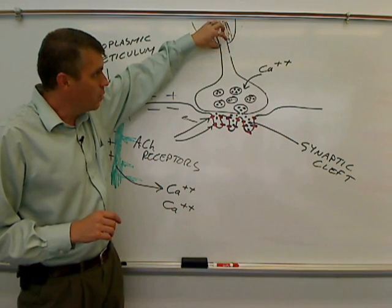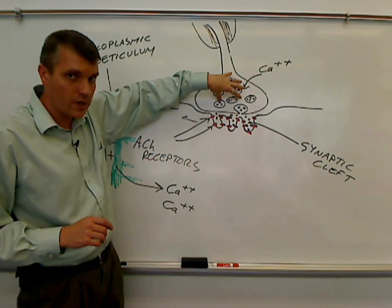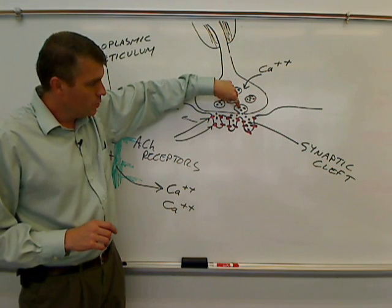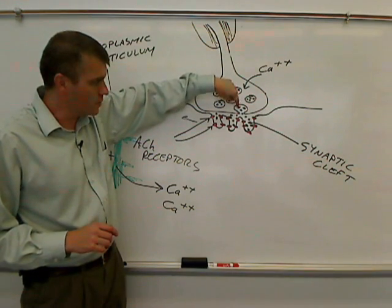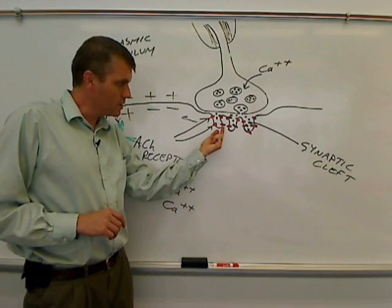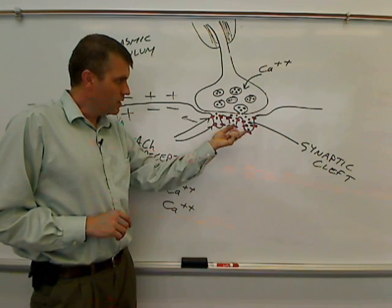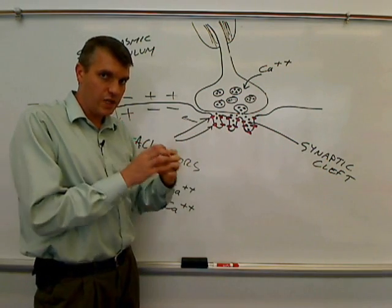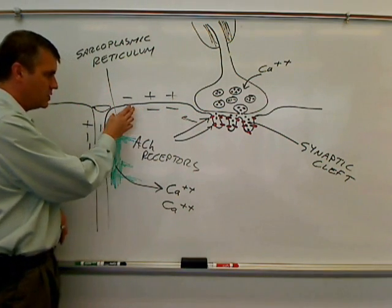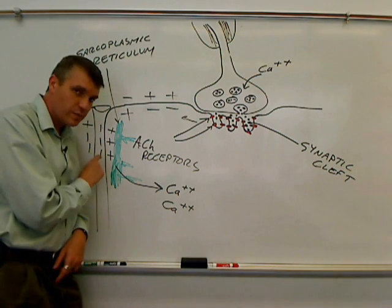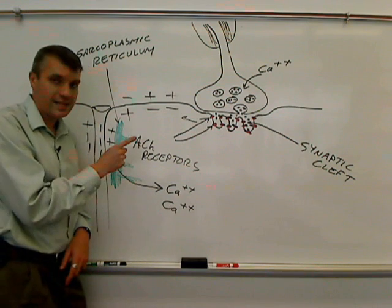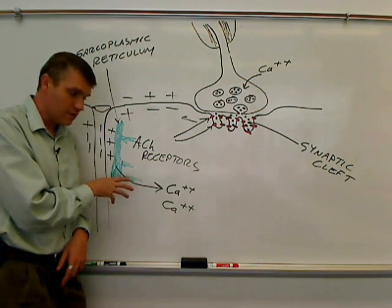An action potential comes down a motor neuron's axon. It reaches the axon terminal. That stimulates synaptic vesicles filled with acetylcholine to dock with the presynaptic membrane and undergo exocytosis, releasing acetylcholine into the synaptic cleft. The acetylcholine binds to acetylcholine receptors that are within these junctional folds. The acetylcholine receptors are ion channels and they open. And that lets ions flow in and out of the membrane. That stimulates an action potential. The action potential goes down T-tubules. When the action potential gets to the T-tubules, that stimulates the sarcoplasmic reticulum to release calcium. That's how a motor neuron signals the muscle cell to contract.